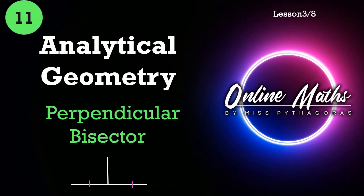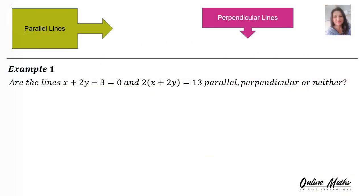Hello everybody. In this video I will teach you how to find, step by step, the equation of a perpendicular bisector. Remember: for parallel lines the gradients are the same, and for perpendicular lines there's a formula — one gradient times the other gradient is equal to negative one. Now let's start with some examples.